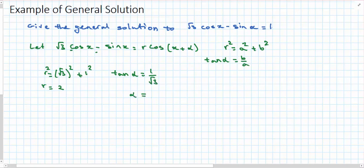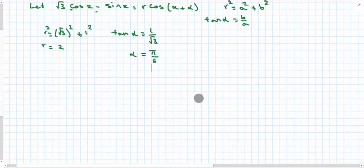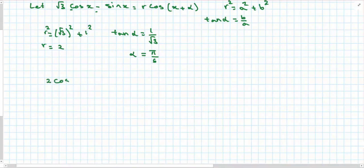Which results in an alpha value of π/6. So instead of solving the original, I can now look at solving 2 cos(x + π/6) equals 1.